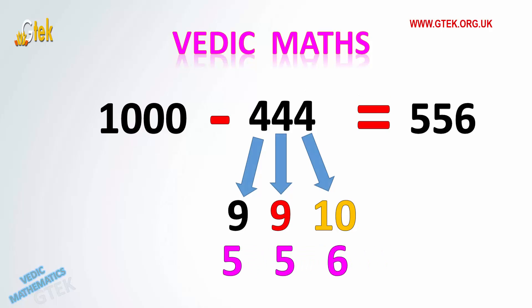The same logic can be applied for subtracting an identical number from 1000. So here as you can see we are trying to subtract the value 444 from 1000. And again applying the same logic: 10 minus 4 is 6, 9 minus 4 is 5, and again 9 minus 4 is 5. So the answer is 556.